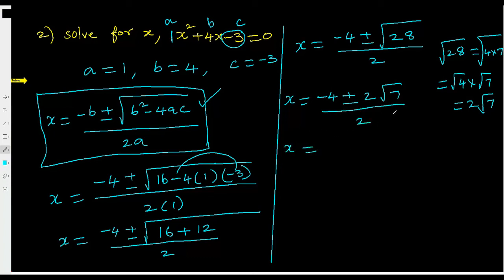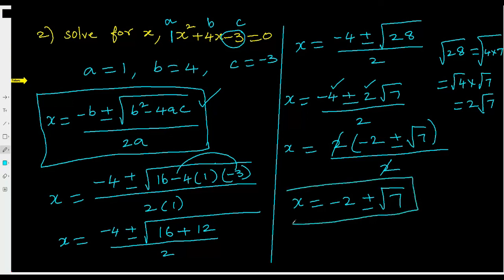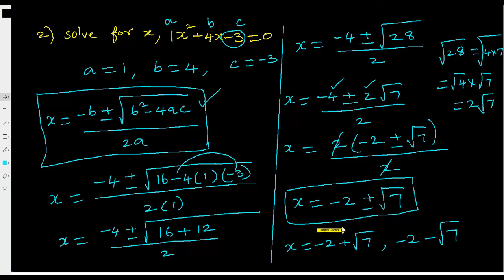Take out the common factor 2 from the numerator: 2 is common in both negative 4 and 2 root 7, giving 2 times (negative 2 plus or minus root 7), over 2. Cancel the 2s, and the final answers are x equals negative 2 plus or minus root 7. Writing as two solutions: x equals negative 2 plus root 7, and x equals negative 2 minus root 7. These are the two solutions for x squared plus 4x minus 3 equals 0.